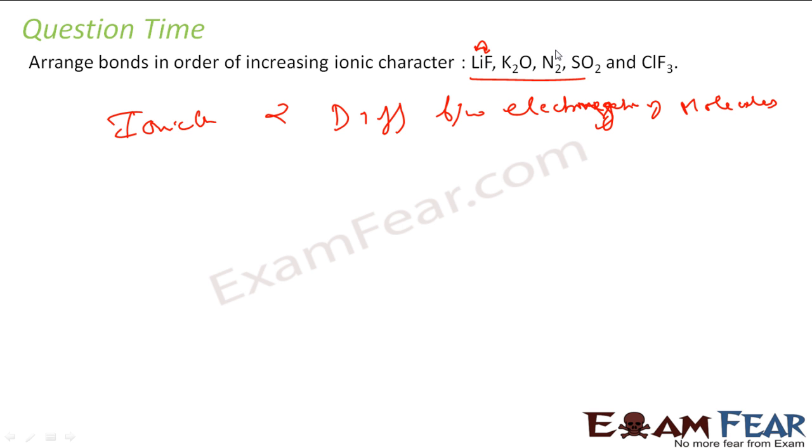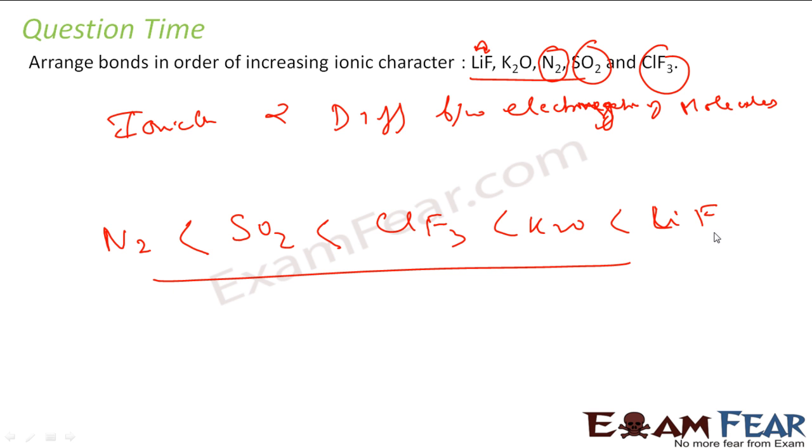So in this case both are same. Nitrogen nitrogen, it has least ionic character. Then comes SO2, then comes ClF3, then comes K2O and the maximum is LiF. Because in this case the difference between lithium and fluorine electronegativity is huge. So more is the difference in electronegativity of the atoms in the molecules, more ionic the molecule will be.